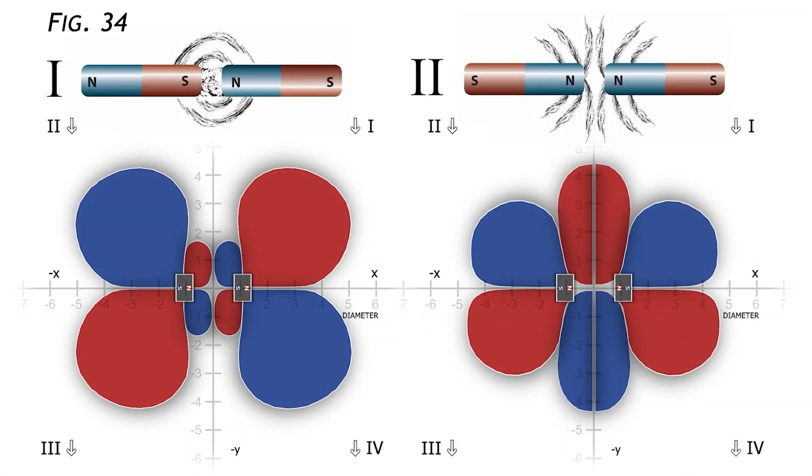For instance, the earlier measurement was taken perpendicular to the magnet axis. Now let's analyze the magnets under the exact same conditions, but with the sensor aligned parallel to the axis.